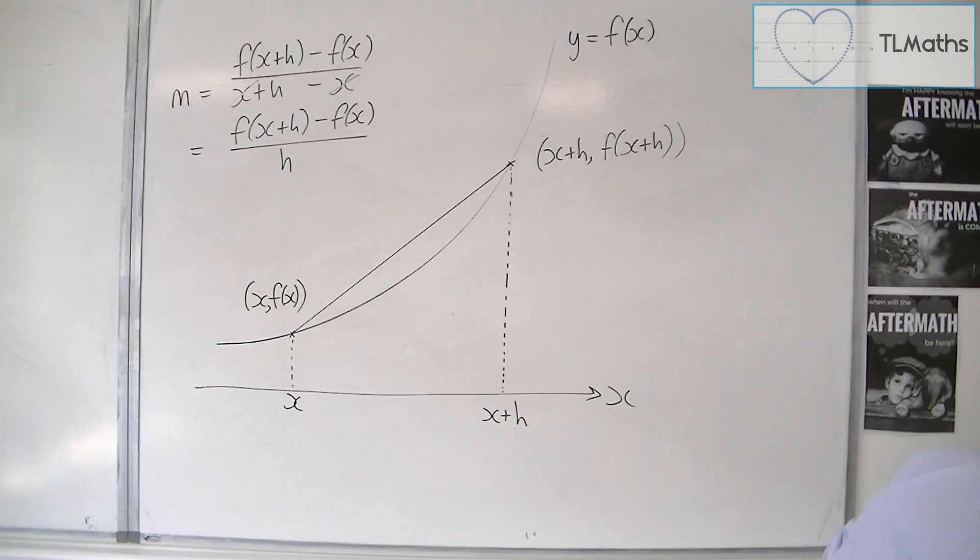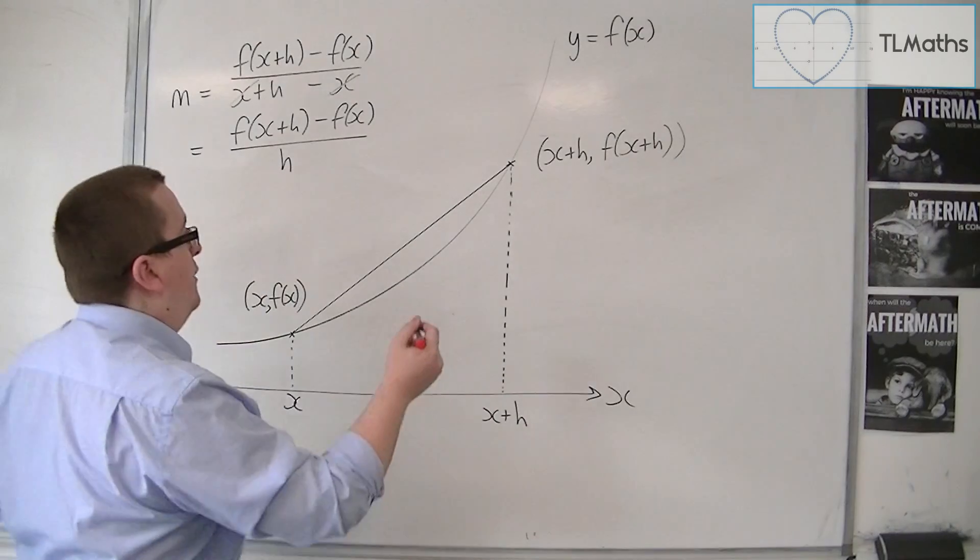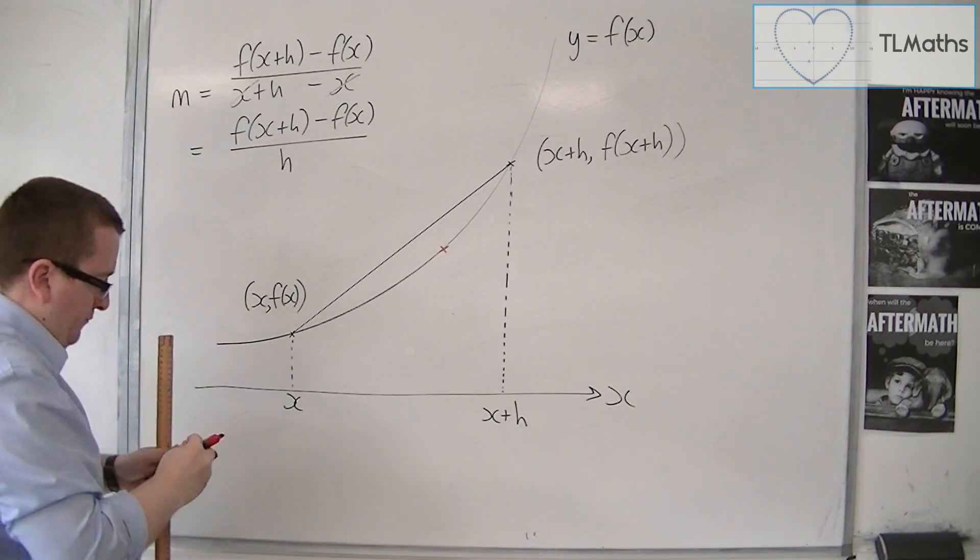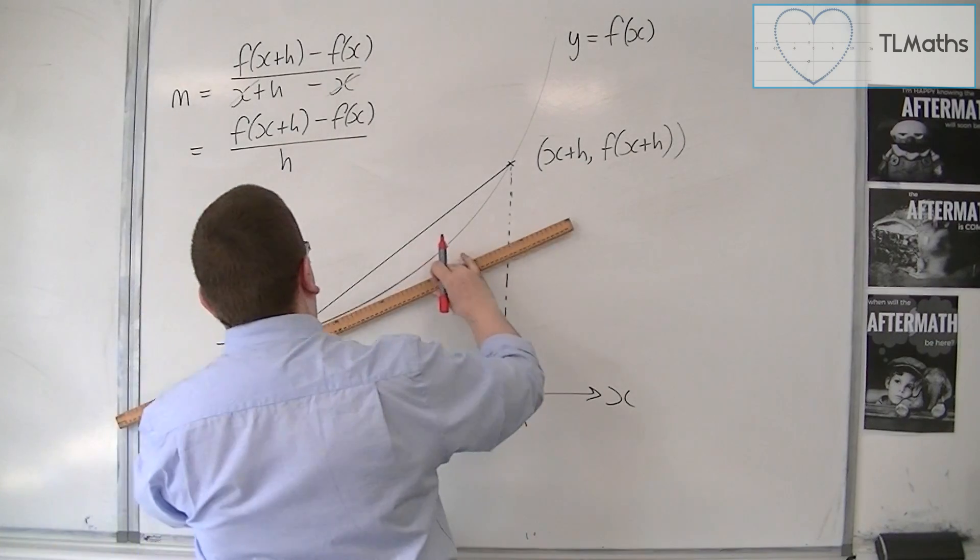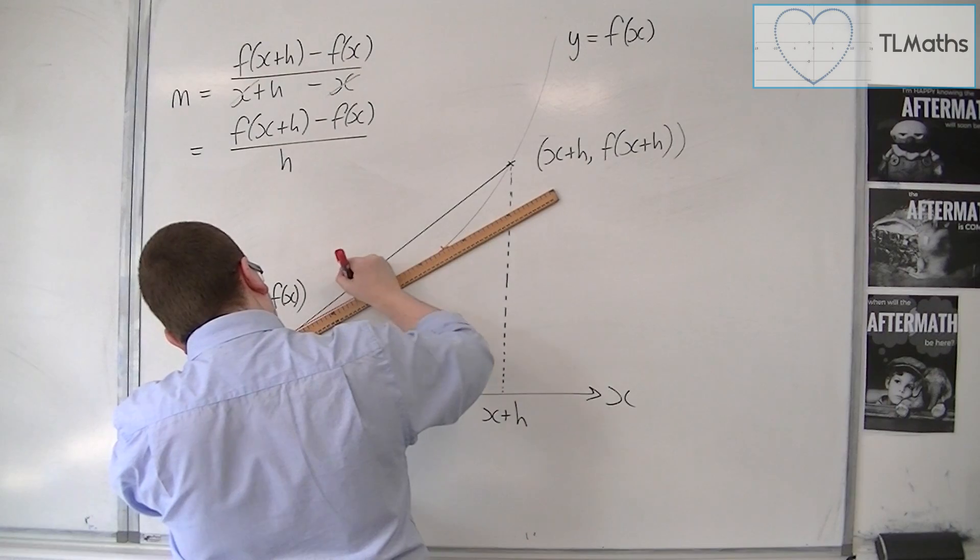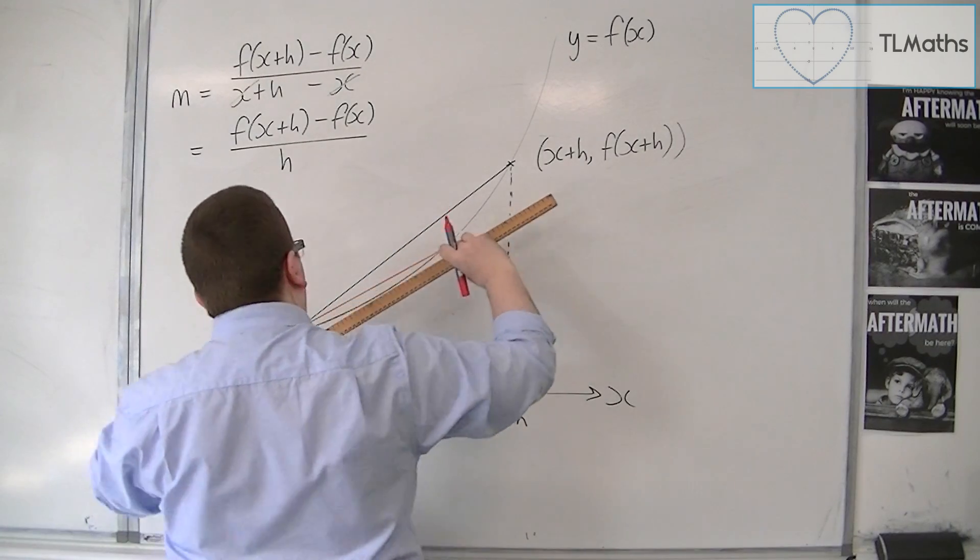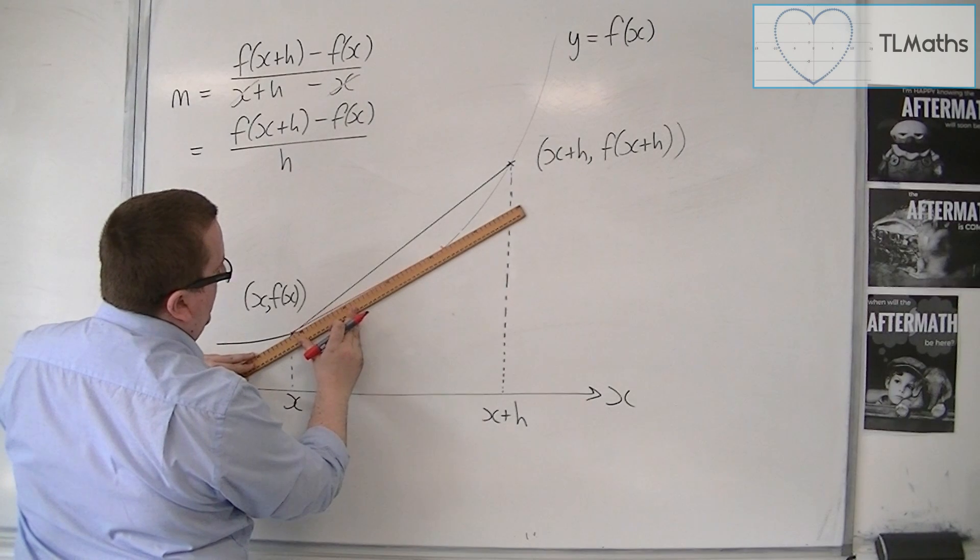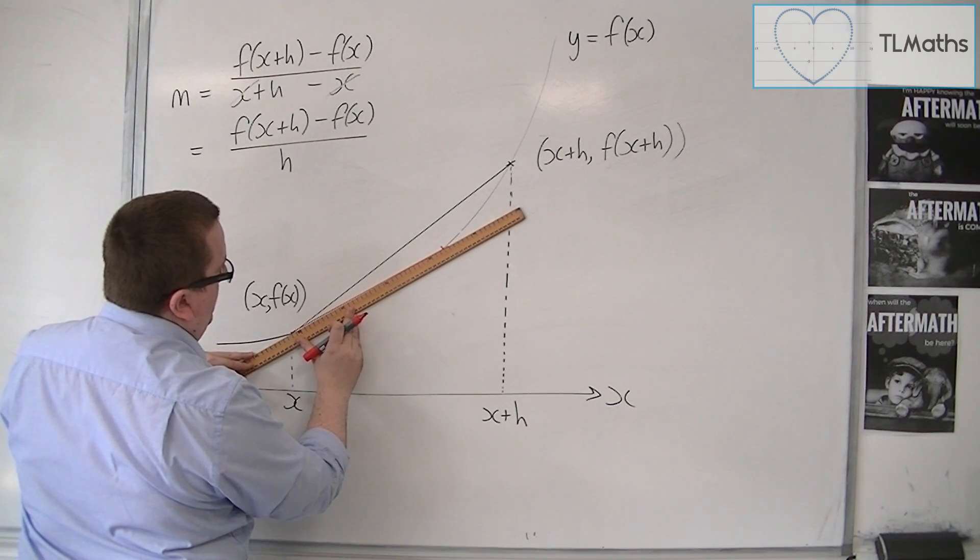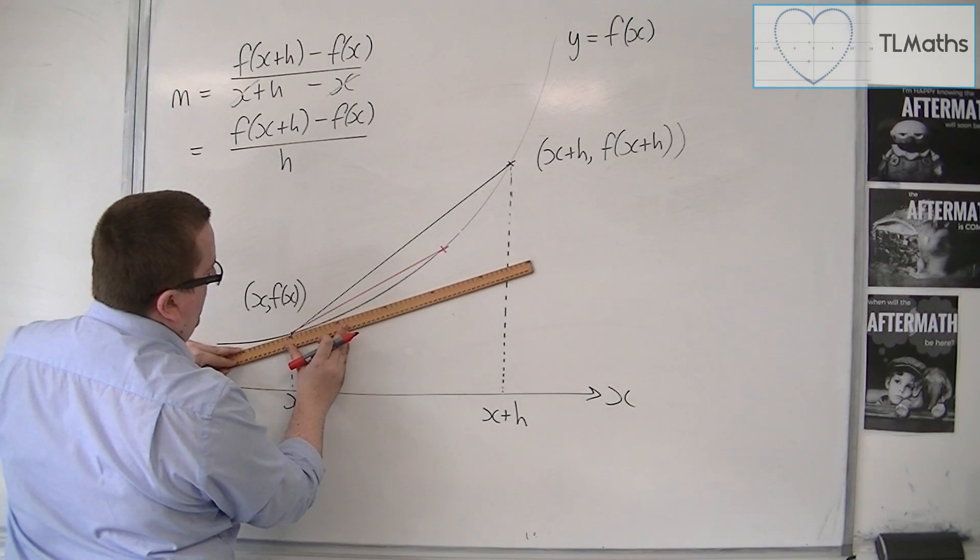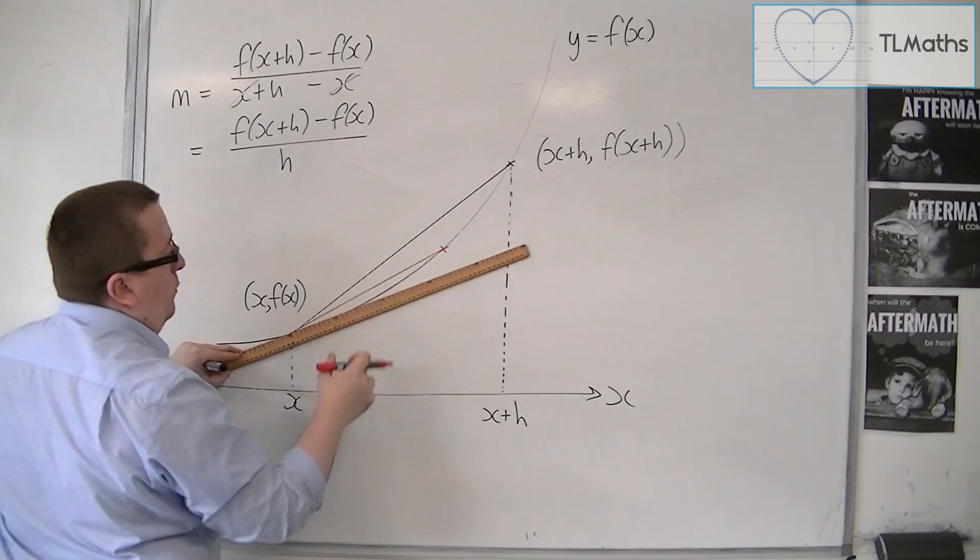Well, if I draw, let's say I've dragged this point along and the point is now there, and I now draw the line between those two points. So, hopefully what you can see is that that line is a better approximation to the tangent at that point than that one was.